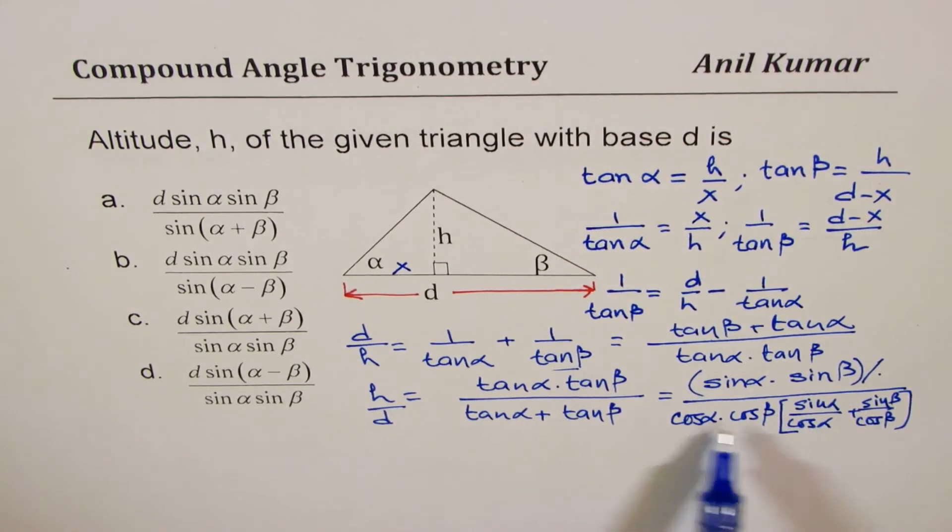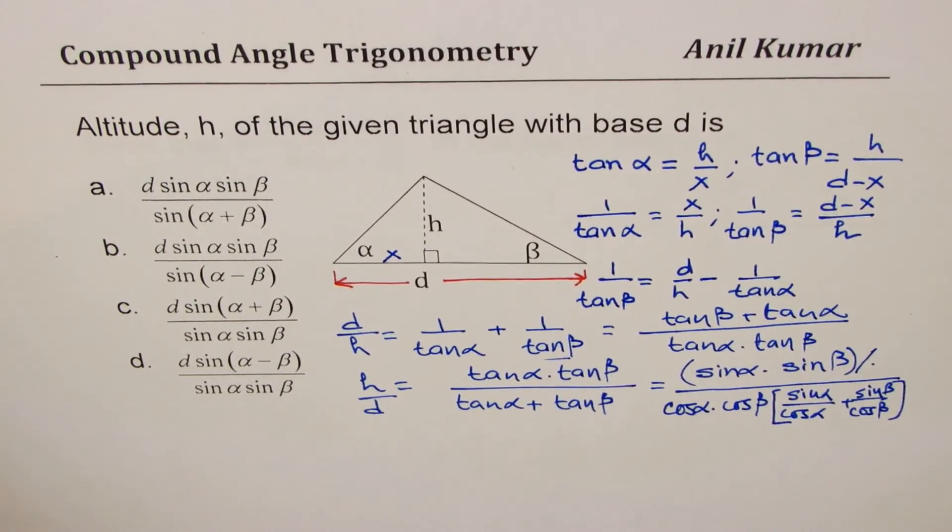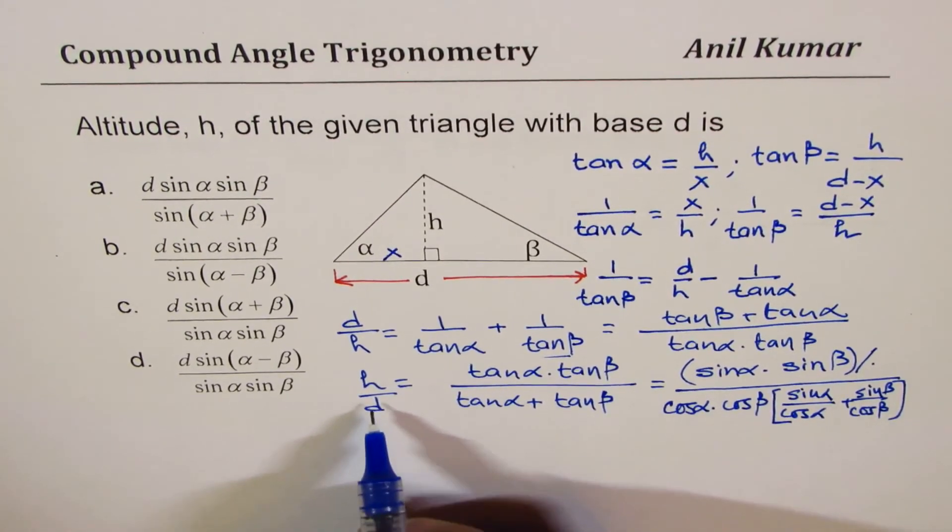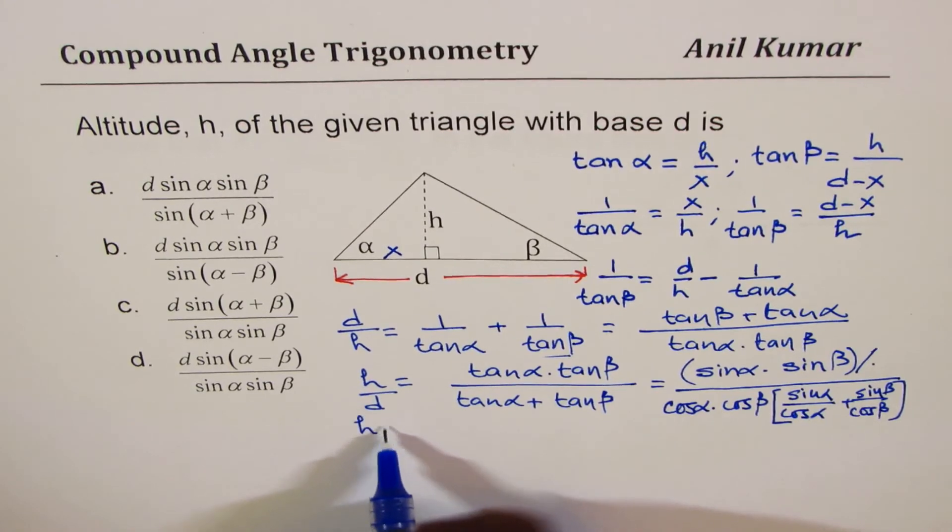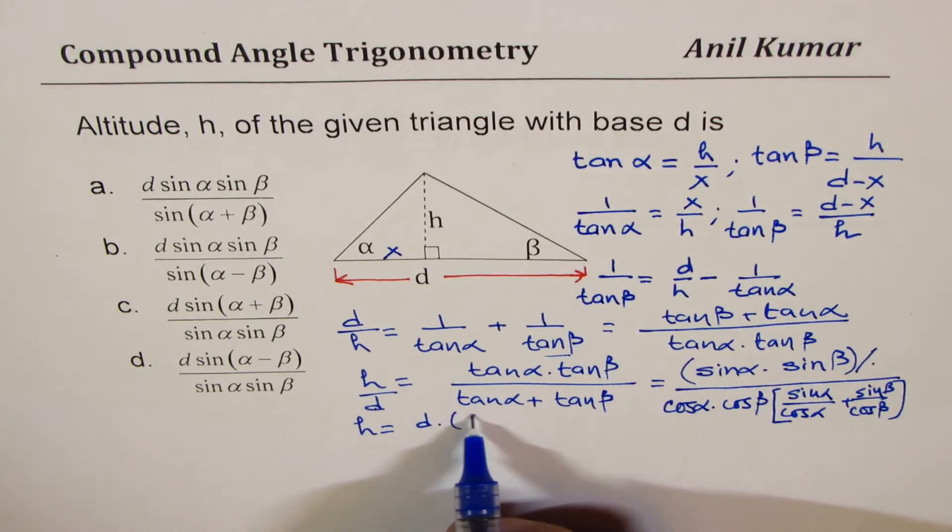This is an interesting way of writing since when I open this up I'll get the formula of sine a plus b. So let's see. We can write this as h equals d times - we have the numerator which is sine α sine β.